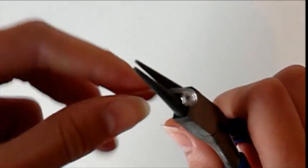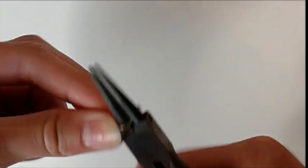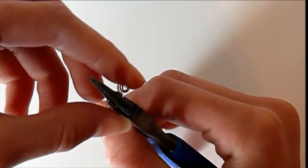Now get the round nose pliers again. Place it behind the spiral and bend the spiral backwards. Make a full circle and go further until the wire points left.